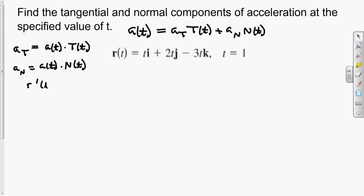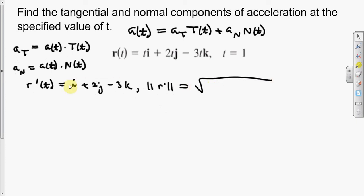So first we find r prime of t; we have i plus 2j minus 3k. Now we find its norm. It's the square root of 1 squared plus 2 squared plus negative 3 squared. So we get the square root of 1 plus 4 plus 9, which is the square root of 14.